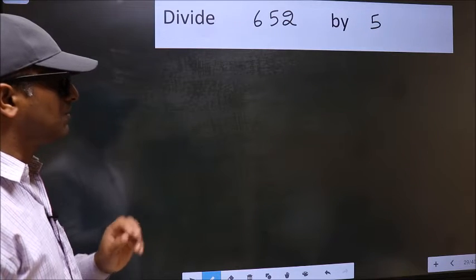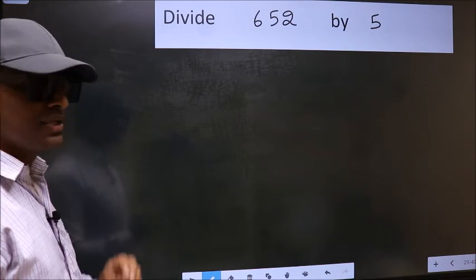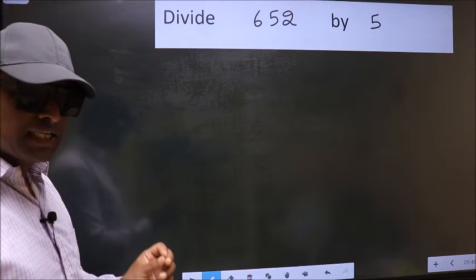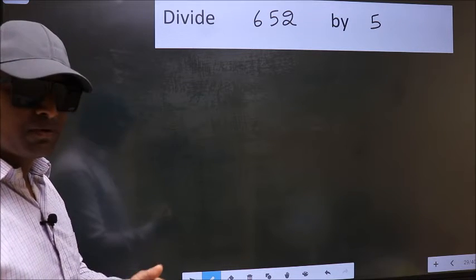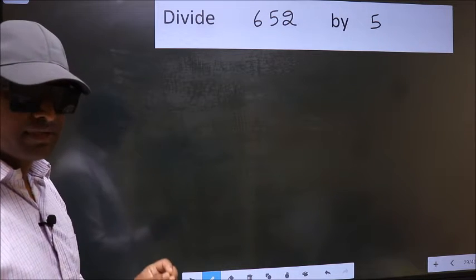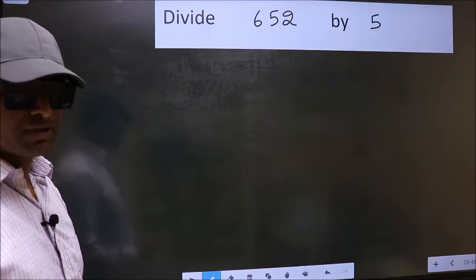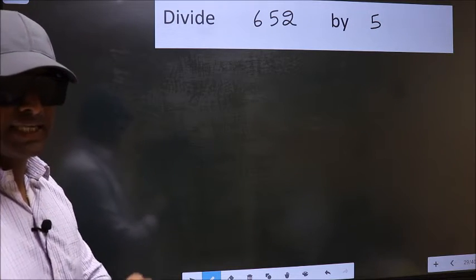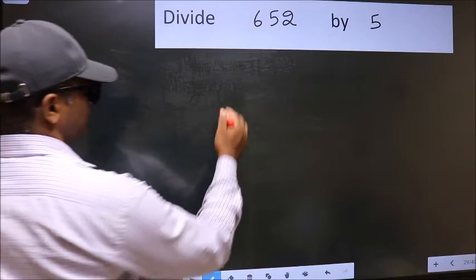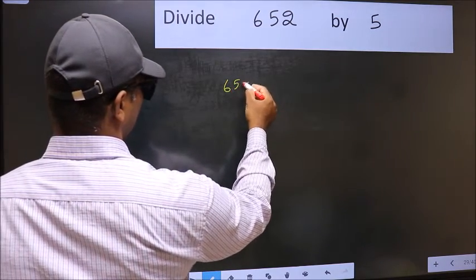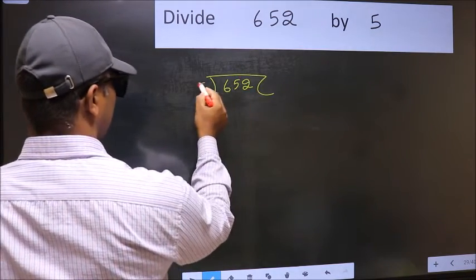Divide 652 by 5. While doing this division, many do this mistake. What is the mistake that they do? I will let you know. But before that, we should frame it in this way. Okay. 652, 5 here.